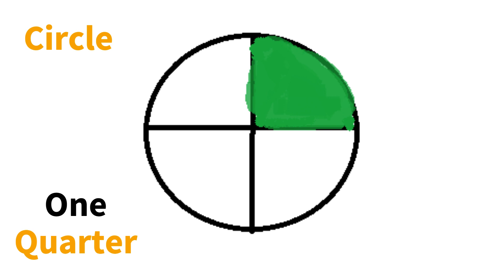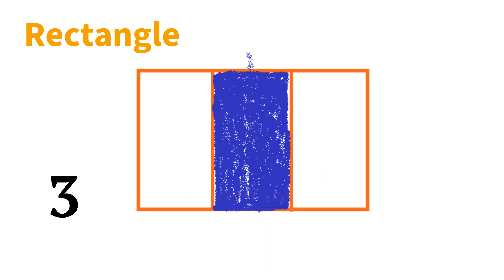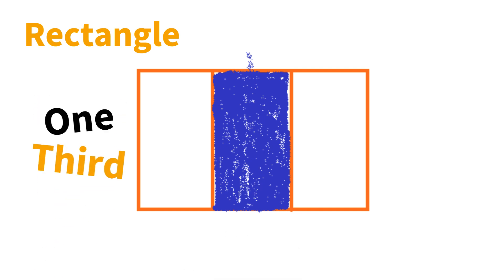Or we say quarter. Look at our next shape. Our next shape is divided into how many parts? One, two, three — three parts. And how many parts are shaded blue? One. So that's one out of three. That's called one third. What is it called? It is called one third.